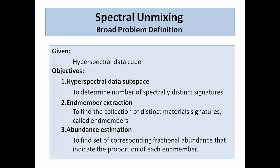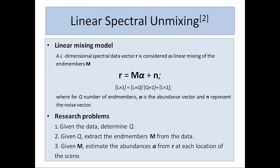In spectral unmixing, the linear unmixing model is represented as R = M*alpha + N, where each pixel R is represented by M number of bands, alpha is the abundance vector, and N is the added noise. R is nothing but the mixed pixel. The research problem is: given the data, determine Q — the number of endmembers — and from the data find M, then find how much abundance is applied for each endmember.